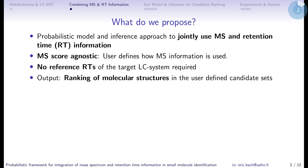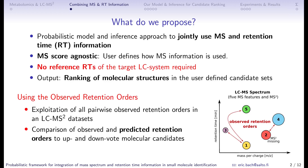What do we propose? We propose a probabilistic model and inference approach to jointly use MS and retention time information. Our model is MS score agnostic, which means that the user can define how the MS information is used. We do not require any reference retention times of the target LC system, and the output is a ranking of the molecular structures in your user-defined candidate sets — achieved by using the observed retention orders.